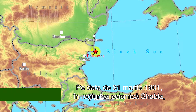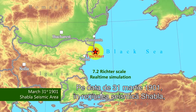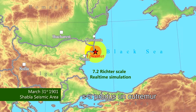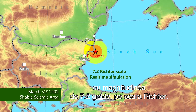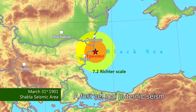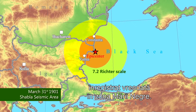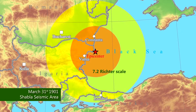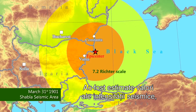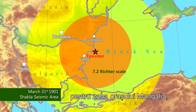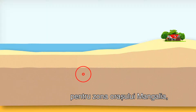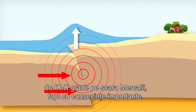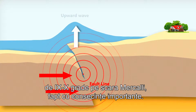On March 31, 1901, an earthquake with a magnitude of 7.2 on the Richter scale occurred in the Shabla seismic area. It was the most powerful earthquake ever recorded in the Black Sea. Around Mangalia city in Romania, there were reported intensities of 9 to 10 on the Mercalli scale, with significant consequences.